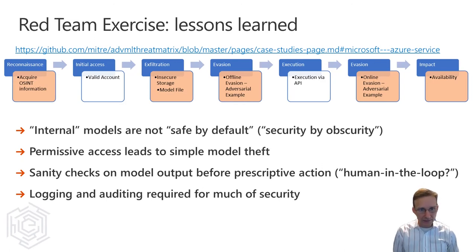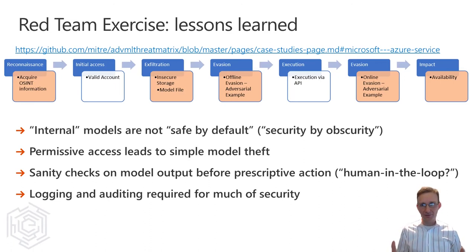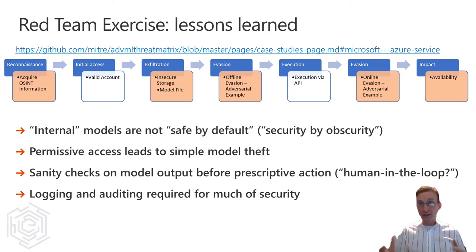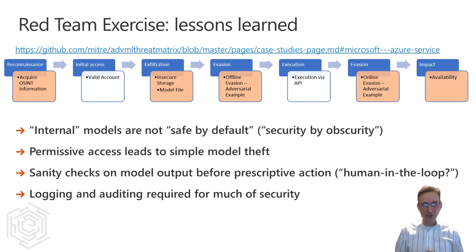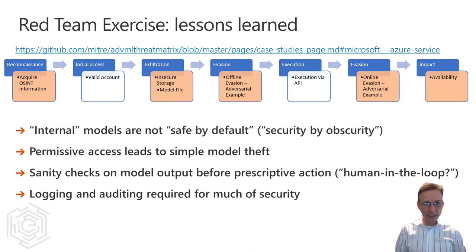There are several lessons to glean from this exercise. Number one: internal models are not safe by default — that is simply security by obscurity in disguise. Even though a model may not be directly accessible to the outside world, there are paths by which an attacker can exploit it to cause cascading downstream effects in an overall system. Number two: permissive access to data or code can lead to simple model data theft. Ask your data science team how they set up permissions around their data and their code. Who cares about algorithmic modeling version when an attacker could more easily replicate your model by exploiting the lack of simple security hygiene, like setting up access controls that are not over-permissive.